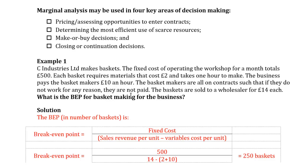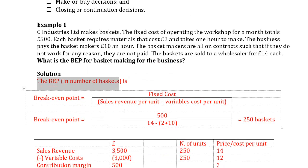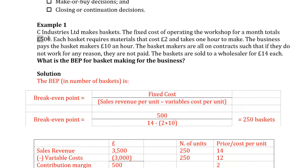The baskets are sold to a wholesaler for £14 each. The requirement is: what is the break-even point for basket making? The equation to calculate the break-even point is fixed cost divided by contribution margin per unit. Contribution margin per unit is the sales revenue per unit minus variable cost per unit. Here our fixed cost is £500 and our sales revenue is £14.